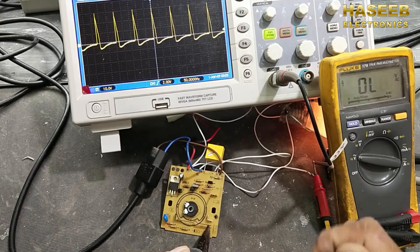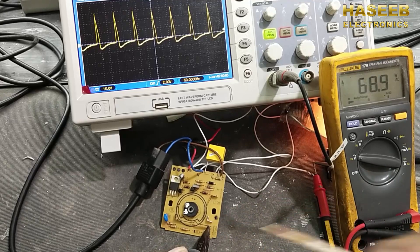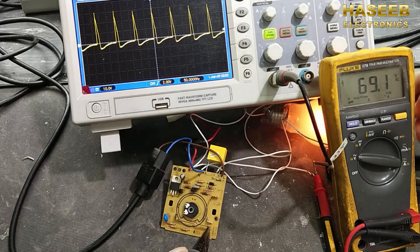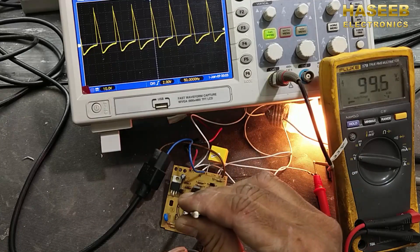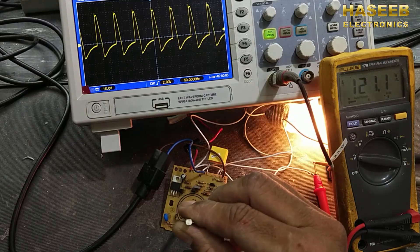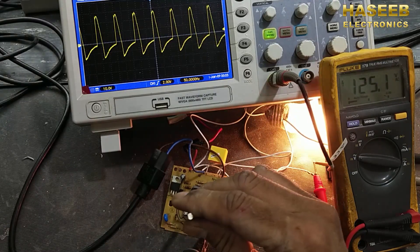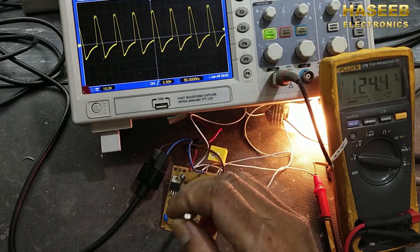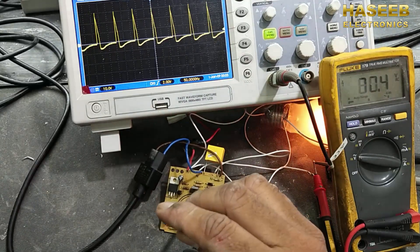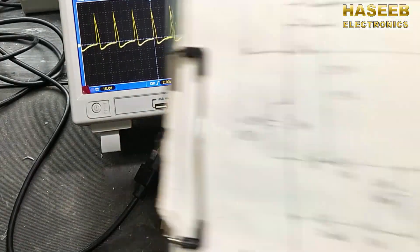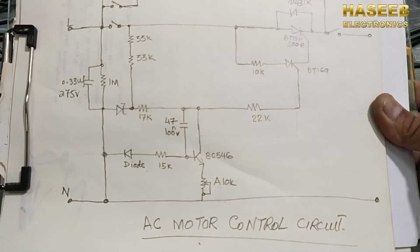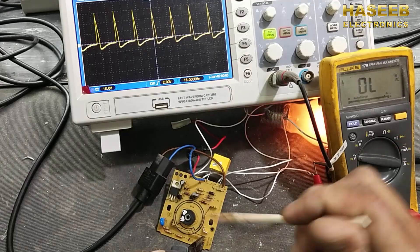When we rotate the knob, basically it turns on the switch. Now we have this lamp on, it is dim. As we adjust the speed, the lamp is bright and we can see the voltage on multimeter and we can see the wave shape. Basically, this circuit is a voltage control circuit, it is a controlled rectifier circuit.